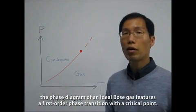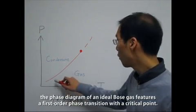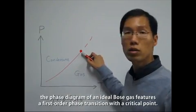The phase diagram of the ideal Bose gas features the first order phase transition, as well as the critical point.